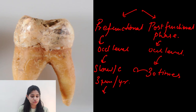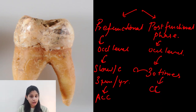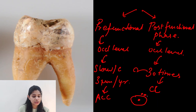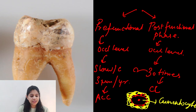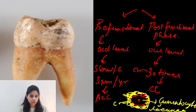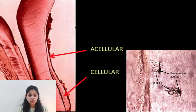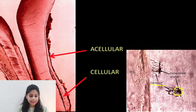In the pre-functional phase, the type of cementum formed is acellular cementum, whereas in the post-functional phase the type formed is cellular cementum, because here the cementoblast secretes the matrix component around the cell itself, causing the cell to get entrapped within its own matrix secretion. This entrapped cell is now termed the cementocyte, which is lodged in an area called the lacunae, connected to other cementocytes through projections termed canaliculi. A histologic picture confirms the cementocyte within a lacuna, interrelated to other cementocytes via canaliculi.